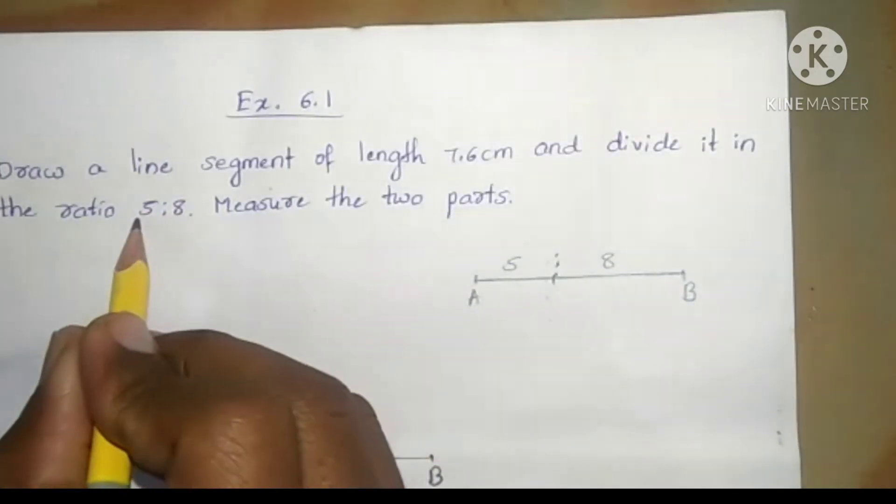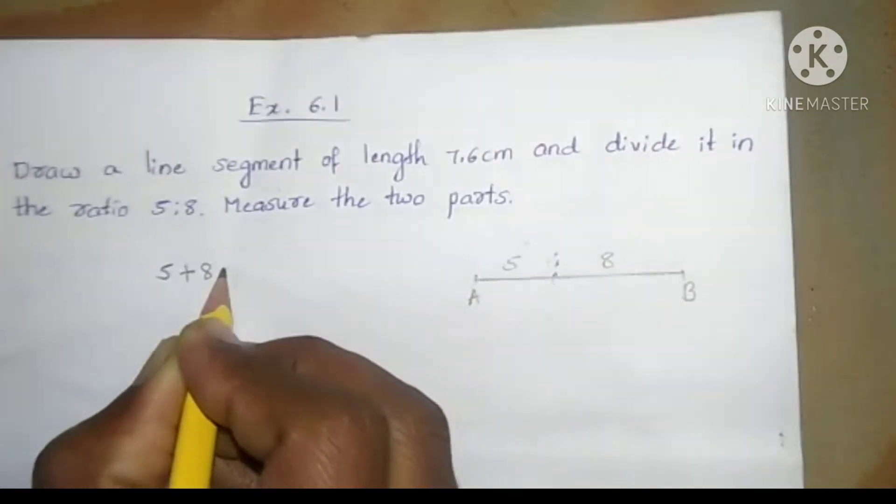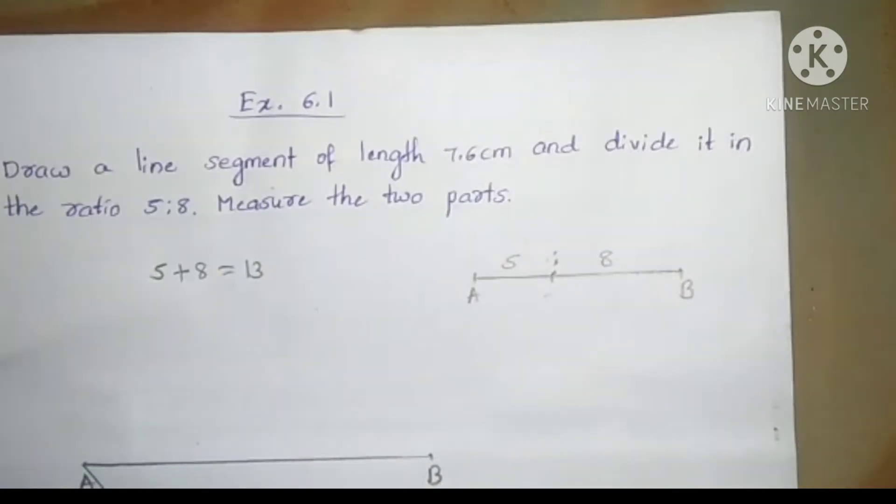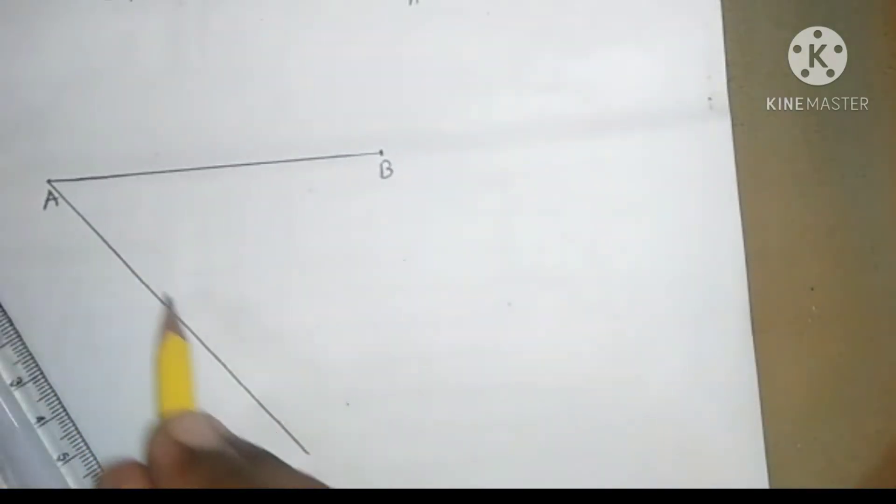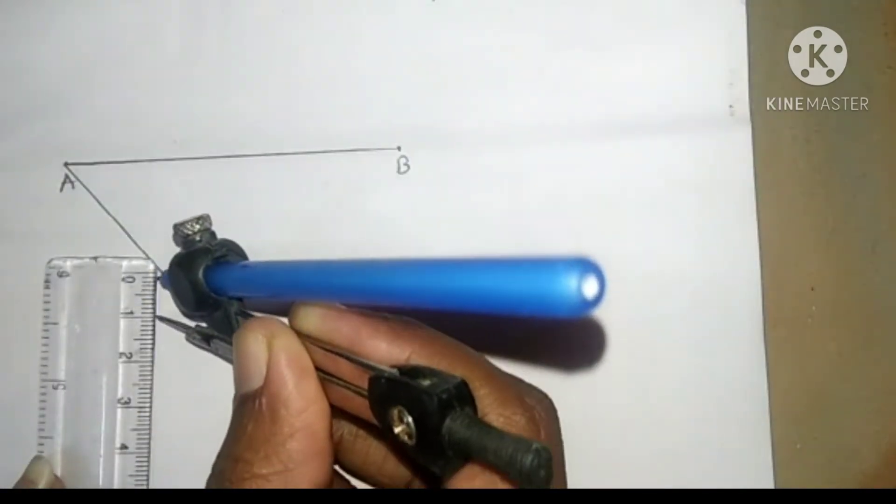Given ratio is 5 to 8. The sum of 5 plus 8 is 13. Draw 13 arcs on this line with distance of 1 cm.